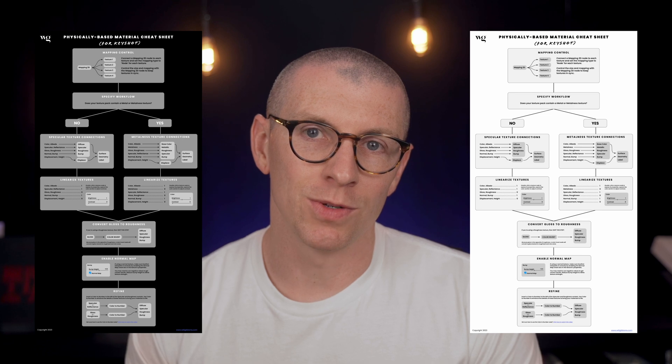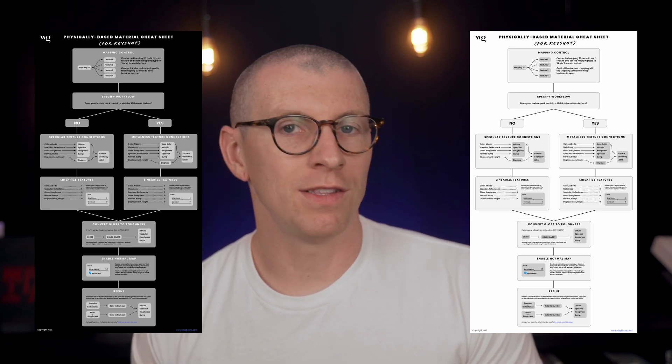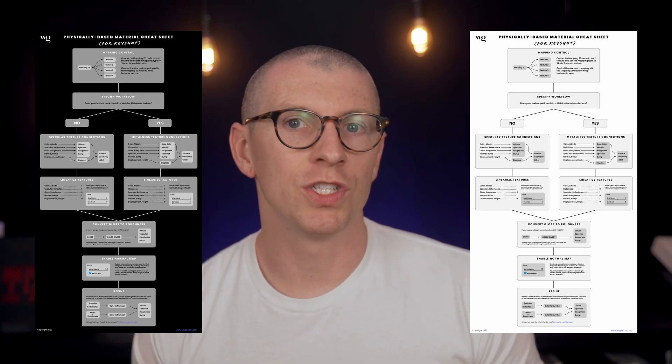The next two steps are where most people go wrong. They either connect the wrong texture to the wrong socket, or they don't know what contrast level to use for each texture. I'm going to walk you through this next, but to make it really easy, I made a cheat sheet just for you. This way you don't need to commit anything to memory. Just follow the link down below to the file vault, scroll down until you find the cheat sheet, download it and keep it somewhere safe, and then you can reference it instead of having to come back to this video.